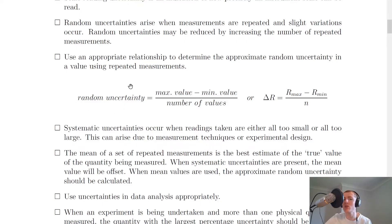So remember to calculate random uncertainty, we take the maximum value, subtract the minimum value and divide it by the number of values in total. Or you could write it down like this for short using capital R. So delta R is equal to R max minus R min over N.